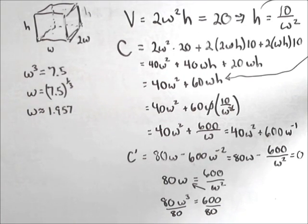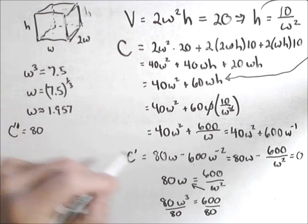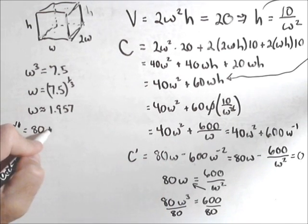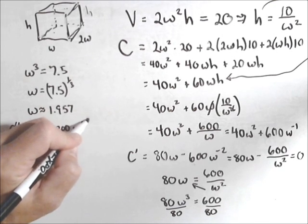Now we do need to decide whether or not this is a min or a max. And I think it's going to be probably just as easy to use the second derivative test. So let's find C double prime. So the derivative of this guy. So that's 80. Bring the negative 2 down. So we got plus 1200w to the negative 3.